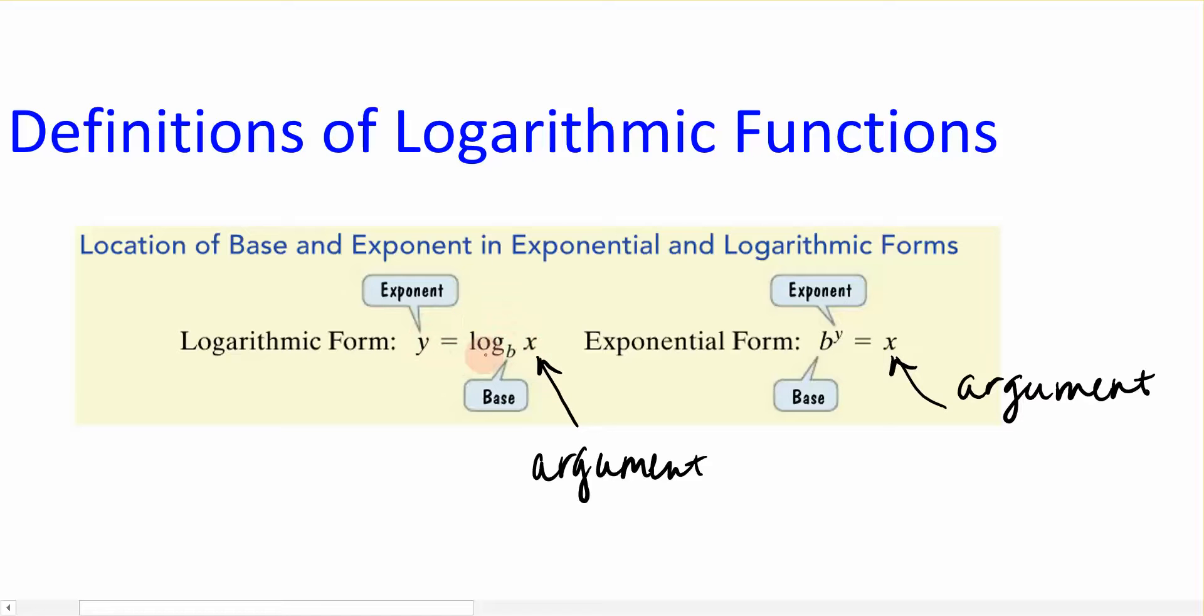So, this is what the log form looks like, and the exponential form of the same function looks like this. We still have a base b. y now looks like it should in the exponent position, and all of that is equal to what we call the argument.